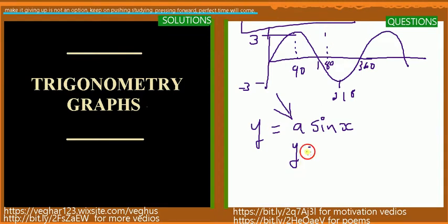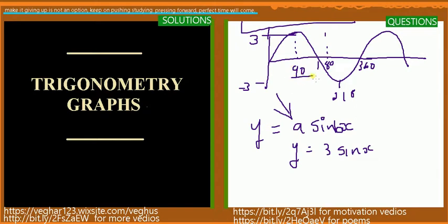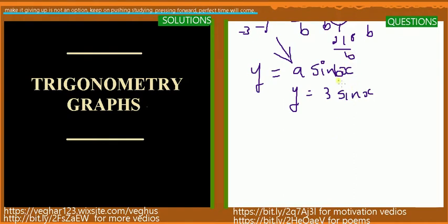If we have a graph where the amplitude is three, the maximum would be three and the minimum would be negative three. If they put a value B here, you have to divide by B. So whatever they put here - if you are given something like this, you divide the x-axis values by B.